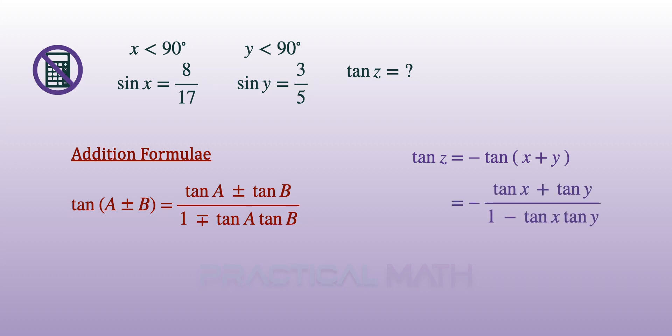Changing angle A to X and angle B to Y, we can rewrite tan Z to equal negative (tan X + tan Y) divided by (1 - tan X tan Y).